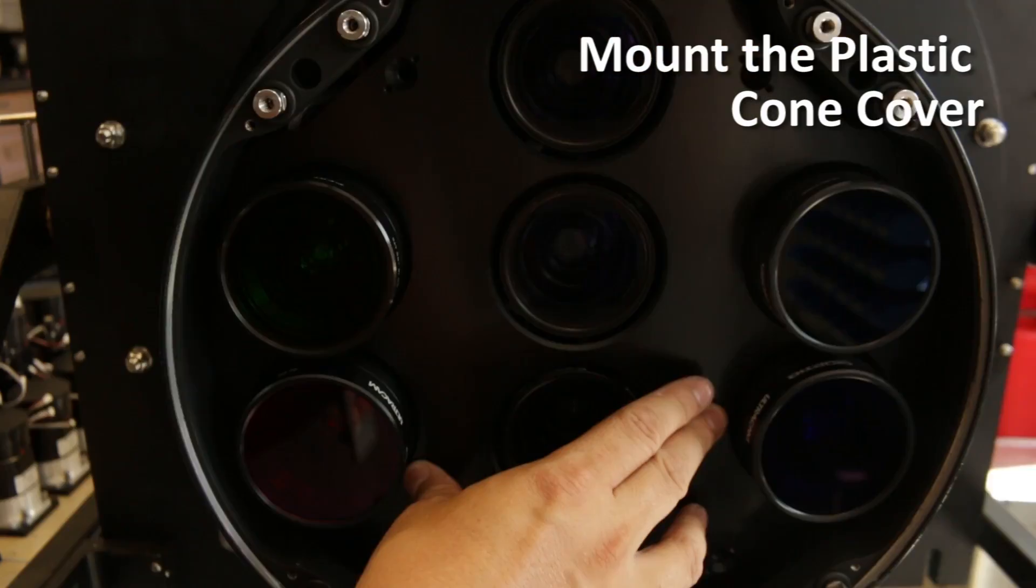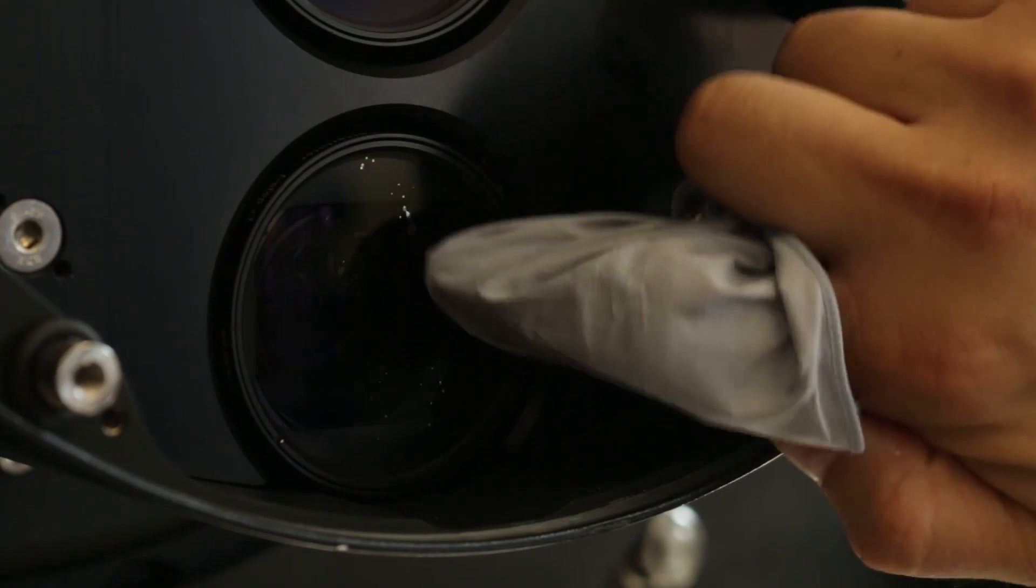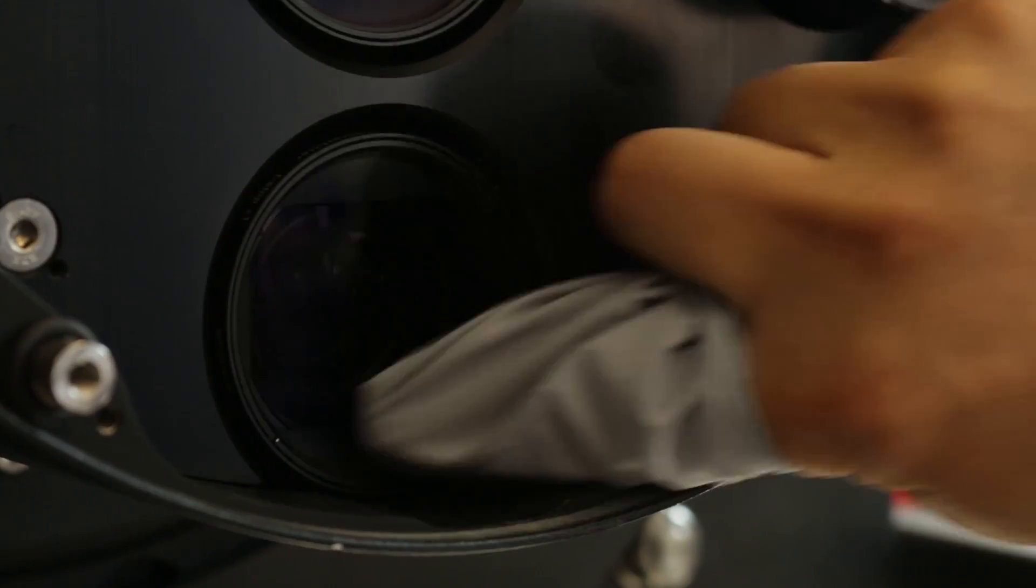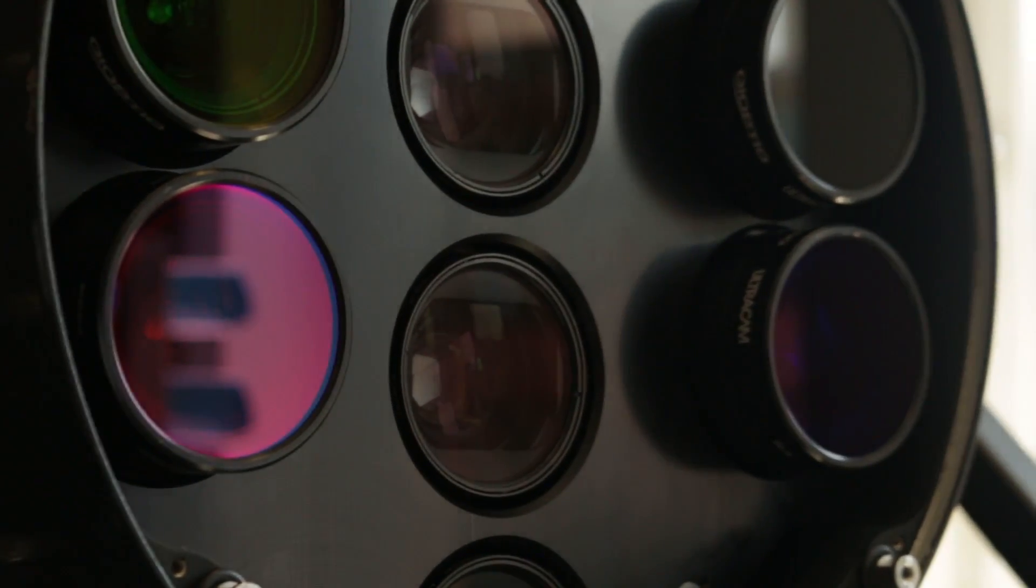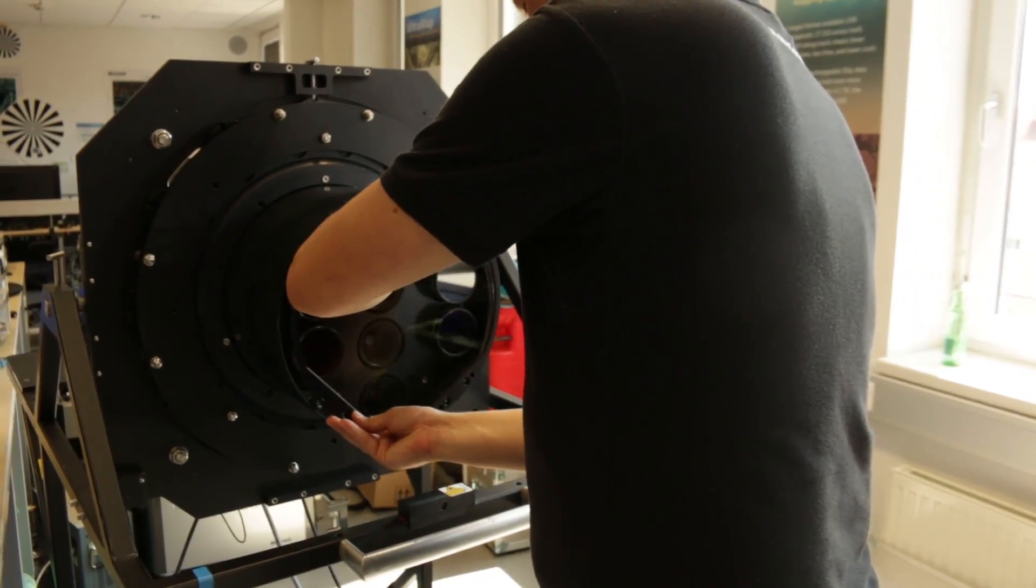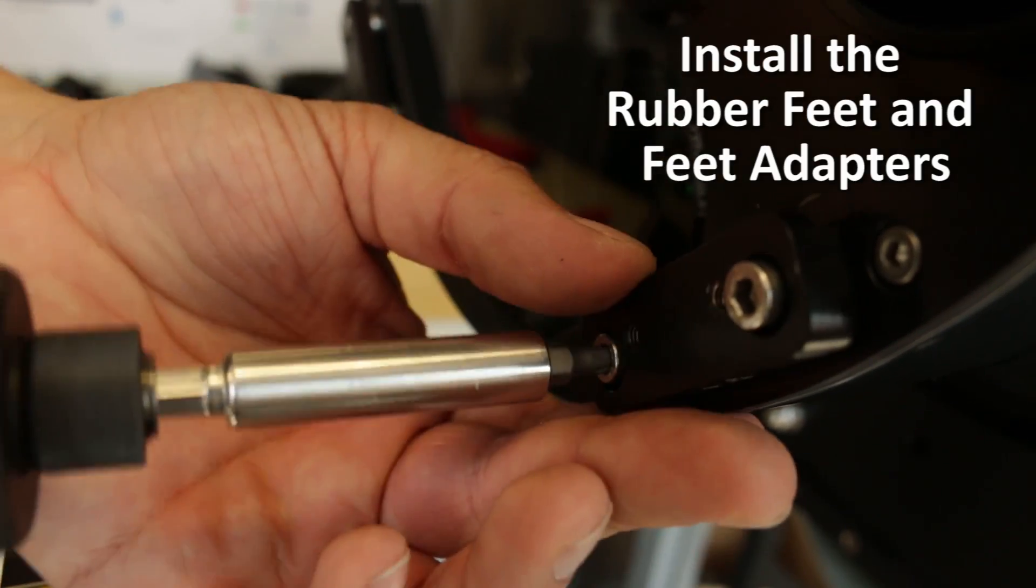The plastic cone cover can be reinstalled. The lenses need to be cleaned before the protection glass can be reinstalled. Also, the rubber feet and the feet adapters need to be put in place again.